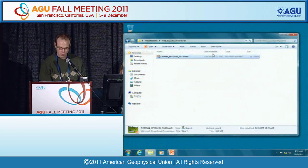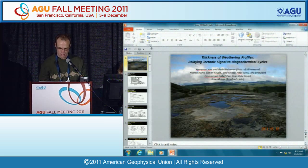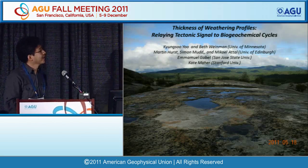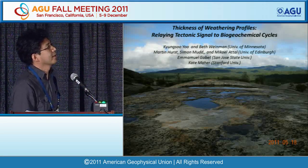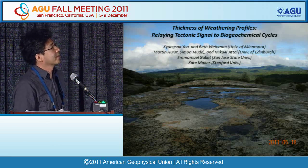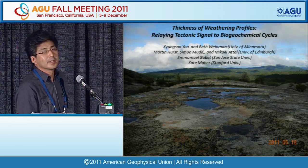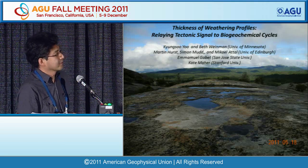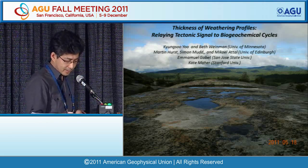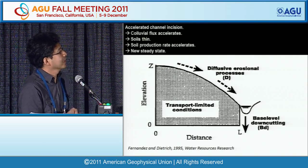The next speaker is Kyung Sung Yoo, giving an invited talk titled Thickness of Weathering Profiles Relaying Tectonic Signal to Biogeochemical Cycles. The study is based in the Feather River in Sierra Nevada, California, and is highly collaborative, involving multiple collaborators from multiple institutions. The talk begins with the basics of morphological evolution of hillslopes in response to channel incision: when a channel incises at the base of a hillslope, the local slope gradient becomes steeper, colluvial sediment flux increases, soil is removed faster, soil production rate increases, and the hillslope evolves toward a new steady-state morphology.